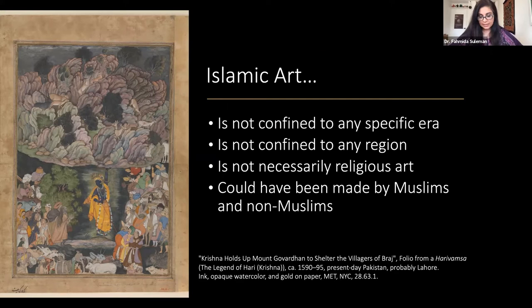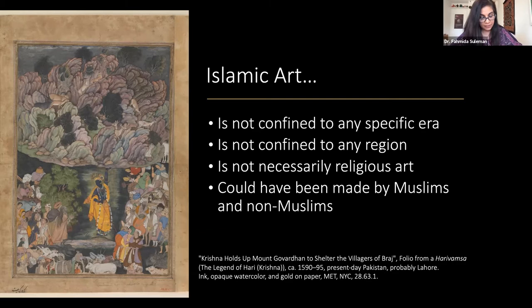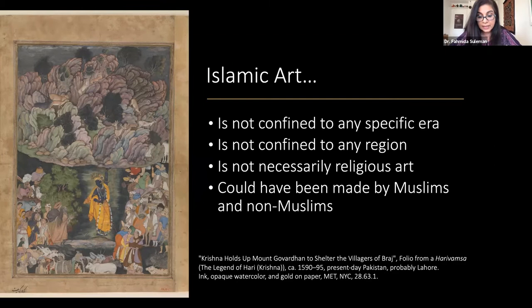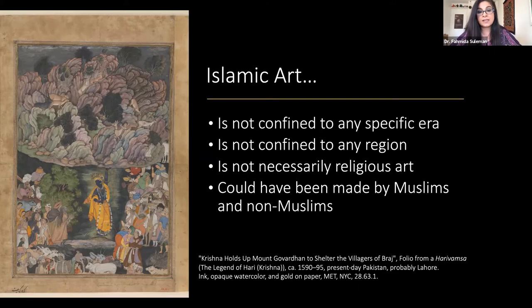Islamic art certainly includes mosque lamps, prayer rugs and Qurans, but also secular objects made for the palace or for daily life. It is not confined to any specific era, any region, and it could have been made by Muslims and non-Muslims. For example, this folio from an illustrated manuscript of the Harivamsa — a genealogy of the Hindu lord Krishna — depicts Krishna holding up Mount Govardhan. This text was translated into Persian and illustrated for the first time during the reign of the Muslim Mughal emperor Akbar, making it part of Islamic art in the broadest sense.